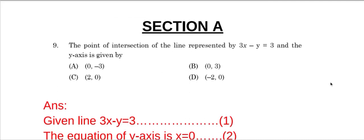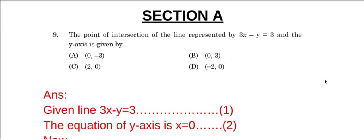So given line 3x minus y equal to 3, and we all know that the equation for y-axis is x equal to 0. Therefore we have these two equations, equation 1 and equation 2. Now to find this point of intersection of this line, we have to solve these two equations.